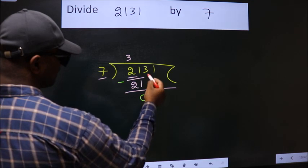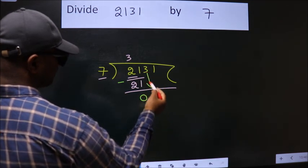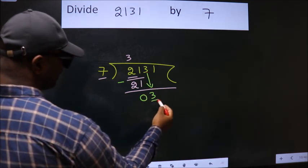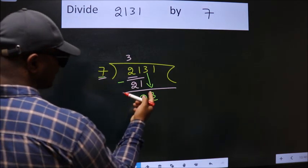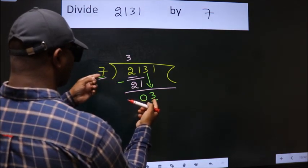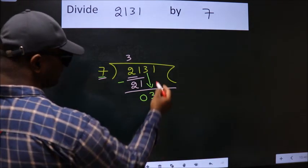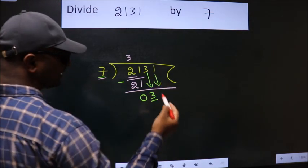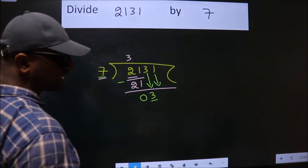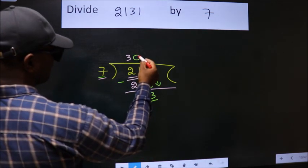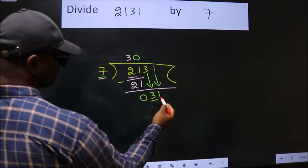After this, bring down the beside number. So, 3 down. Here we have 3, here 7. 3 is smaller than 7, so we should bring down the second number. And the rule to bring down the second number is put 0 here. Then only we can bring down this number.